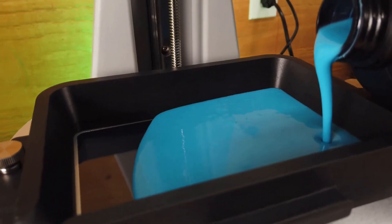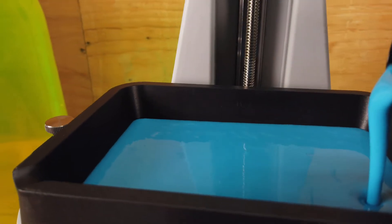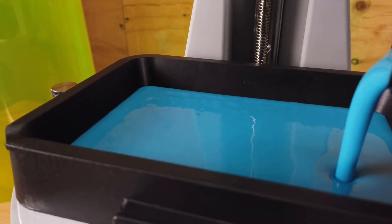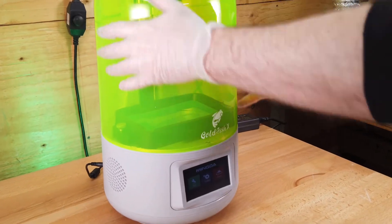I'm just going to fill up my vat to the max line so I don't overflow this and start a test print. Whenever you're printing, make sure you have your acrylic dome on so no UV light gets in.